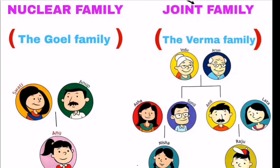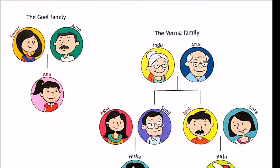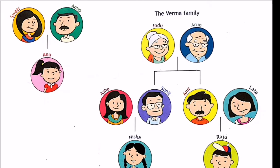Look at the picture — it shows two families, the Goels and the Barma's. In the Goel family you will see three people: Mr. Anup Goel, Mrs. Swathi Goel, and their daughter Onu. They are the members of the Goel family. The Goels are a nuclear family because it is a small family and Onu is living only with her parents — she is the single child of her parents.